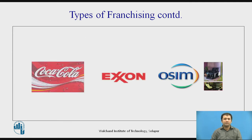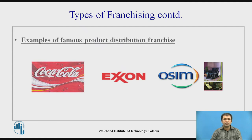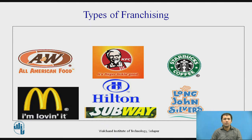Coca-Cola, Exxon, and OSIM are examples of product distribution franchising. As we all know, Coca-Cola, Exxon, and OZM are the examples of product distribution franchising.